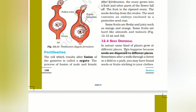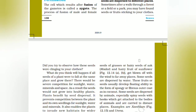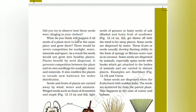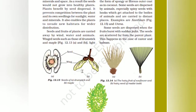Seed dispersal: in nature, the same kind of plants grow at different places because seeds are dispersed to different places. Sometimes after a walk through a forest, field, or park, you may find seeds or fruits sticking to your clothes. If all the seeds of a plant were to fall at the same place, there would be severe competition for sunlight, water, minerals, and space, and the seeds would not grow into healthy plants. Seed dispersal prevents this competition between the plant and its own seedlings, and also enables plants to invade new habitats for wider distribution.